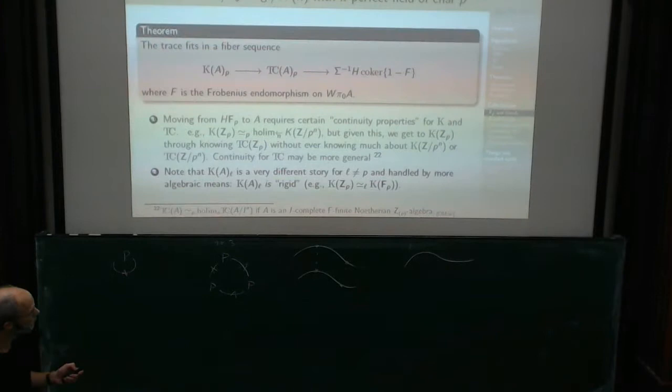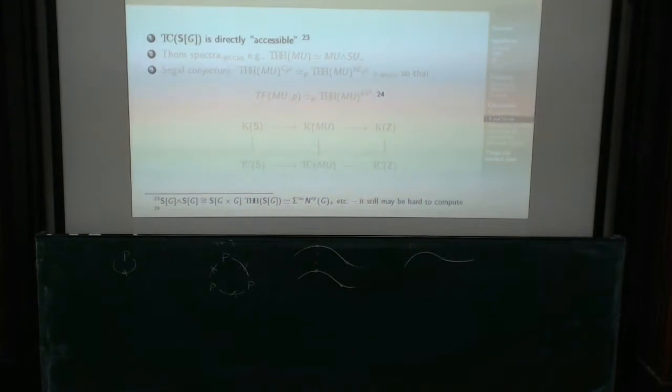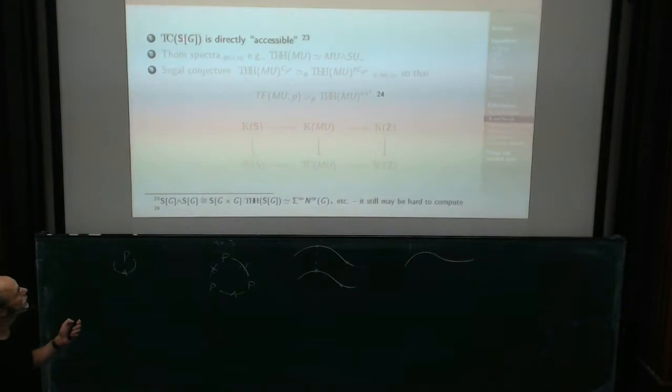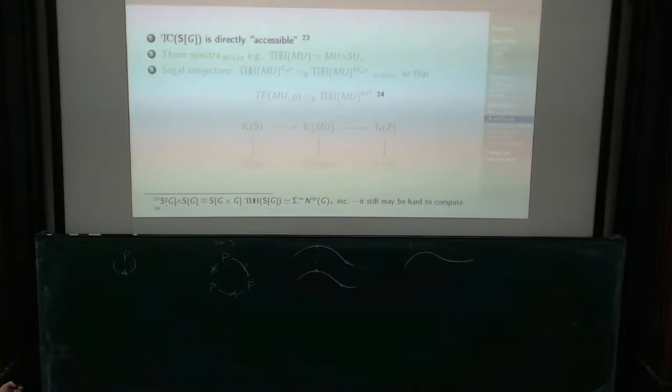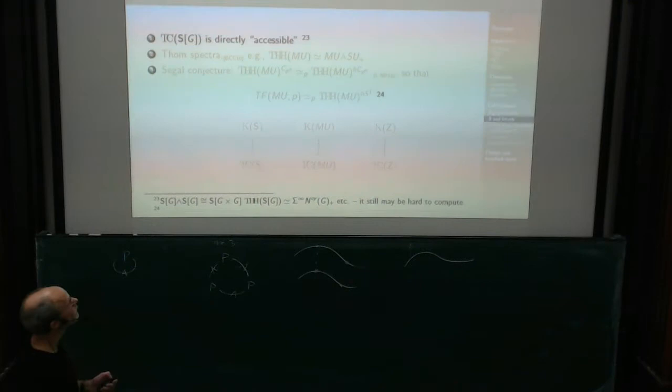Let's look at the other side of the story: those who are close to the sphere spectrum. For instance, spherical group rings — Varisco talked about interesting group rings yesterday. When working with the sphere spectrum, you think you know what this should be. If you just smash the spherical group ring with itself, you get the spherical group ring over the product. So THH of the spherical group ring is just the suspension spectrum of the cyclic nerve. But of course it can be awfully hard even so.